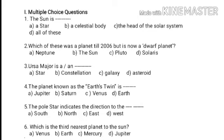Second one: which of these was a planet until 2006 but is now a dwarf planet? First option, Neptune; second option, the Sun; third option, Pluto; fourth option, Solaris. Which is the correct answer? Yes, Pluto is the correct answer.